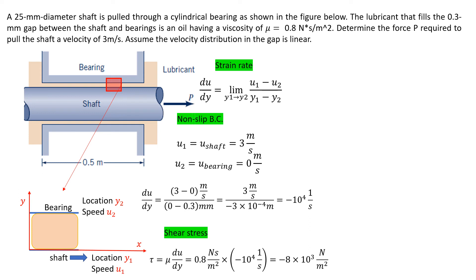Then we can apply the shear-strain rate relation. Shear stress τ equals viscosity times strain rate. Plugging in the viscosity and the strain rate, we get that shear stress is -8 × 10³ with the unit newtons per meter squared.